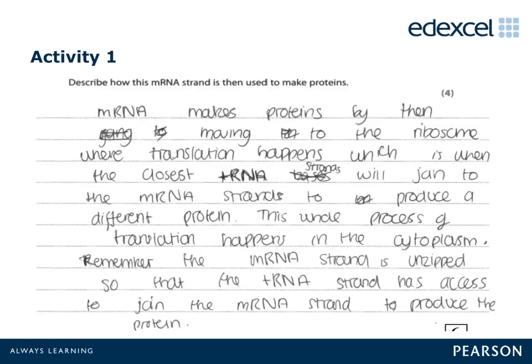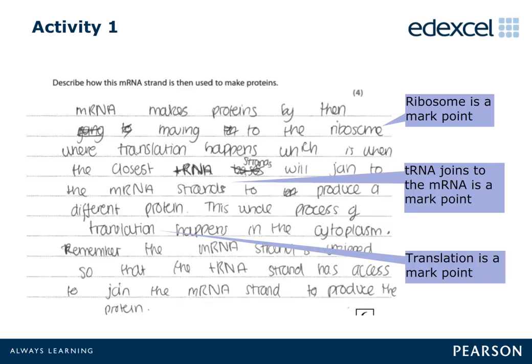Look at this example of an answer to question 3c part 3 on the foundation tier paper. Using the mark scheme, decide what mark you think should be awarded and why. This is a point at which you can pause the video to look at the whole question on page 7 of the question paper and the mark scheme. This was a very good response and many candidates produced answers of this quality. Out of the 4 marking points available, this candidate's answer addressed 3 of them and so scores 3 of the 4 marks.